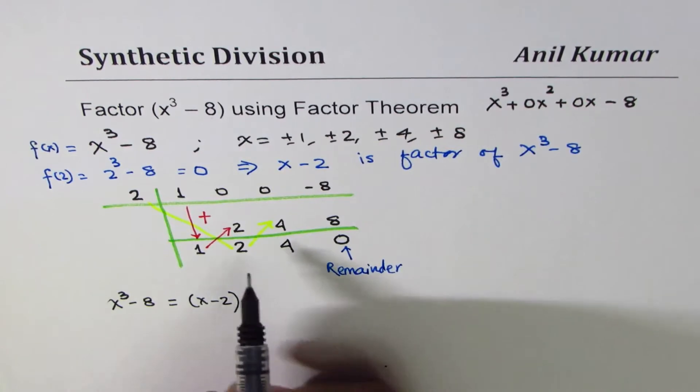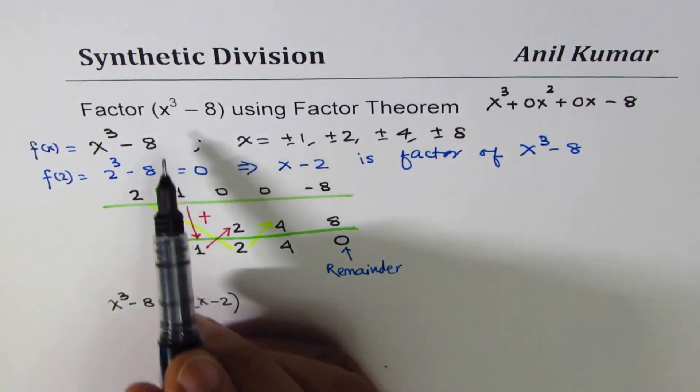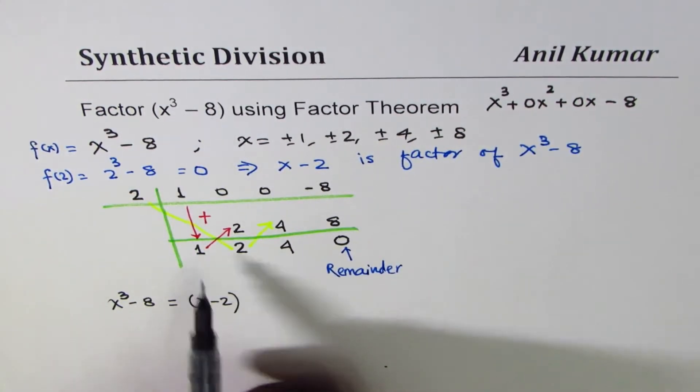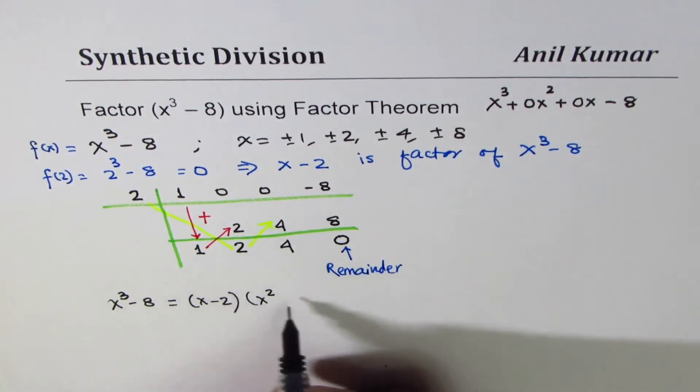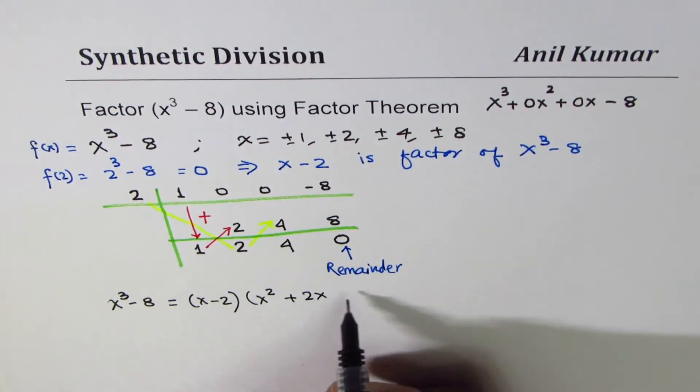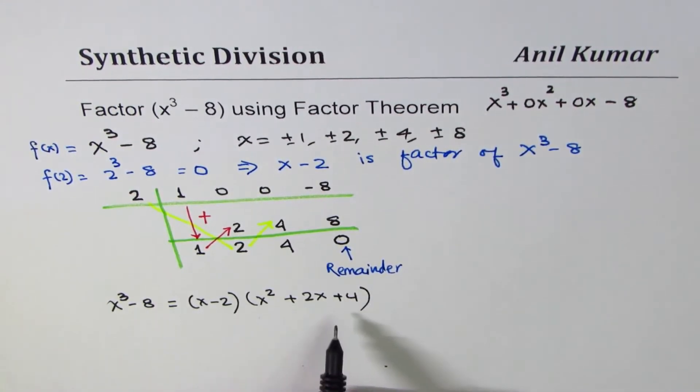Times 1 degree lower than the cubic. So with coefficient of 1, we get x squared plus 2x plus 4. Right? So that is how we can factor it.